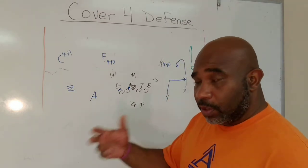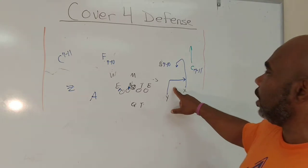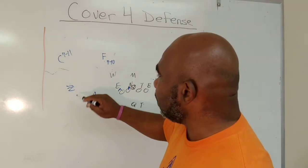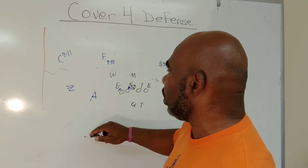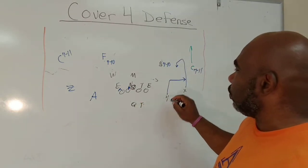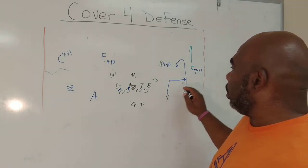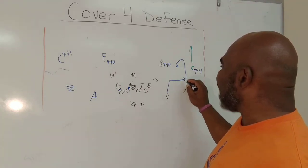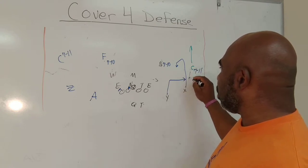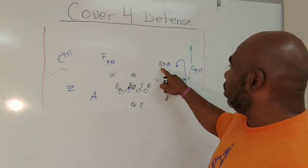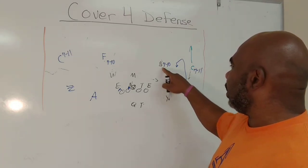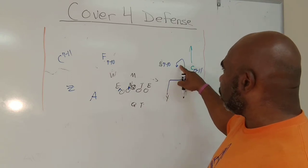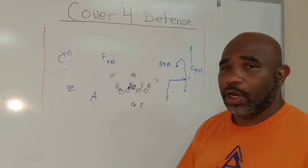Two-read. I read the number two receiver. Over here, I have a route combination drawn up, just curl flat. And I'll draw another one over here. The basic, I mean, it could be slants, it could be whatever we want it to be. But we're reading the number two receiver. Corner and safety are going to stay deep, unless the number two, it depends on what number two does. If two goes out, that triggers this corner to come down. Number one sees that, his eyes go to number one. If one is still going vertical, he has to go vertical with it. In this case, number one is doing a curl. So we're going to rob the curl, get up underneath the curl.